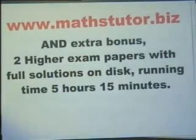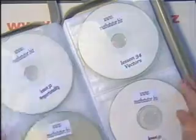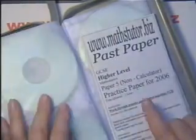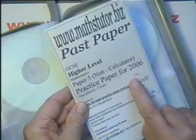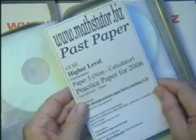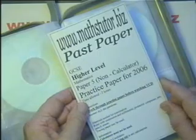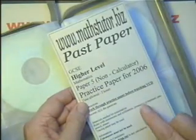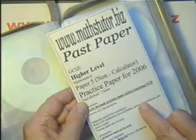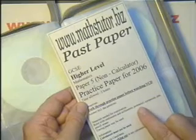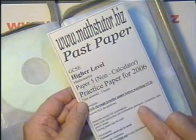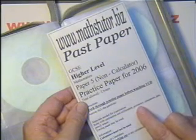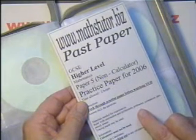Looking at the wallet, at the end of the lessons you'll find a practice exam paper — Paper 5, non-calculator for 2006. Although the papers may have changed in 2008, the content is still the same for the examination, so these older papers are still very valid for revision. More of these papers can be acquired from the MathsTutor website.